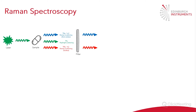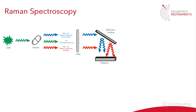Next, our light is directed onto a filter, and this filter is to remove the Rayleigh scattering that isn't of interest to us. We use either notch or edge filters to remove it, and then the Raman scatter is directed onto a diffraction grating. The grating splits the light into its constituent wavelengths, and this is then focused onto a detector.